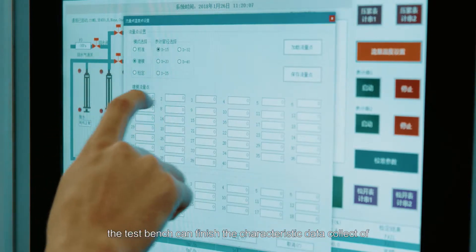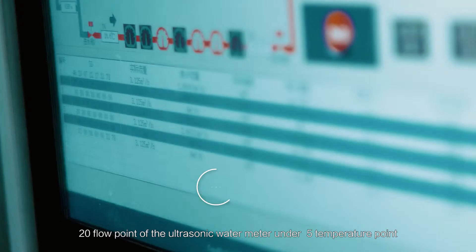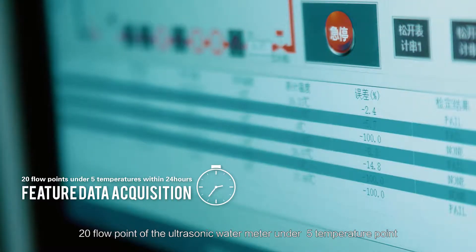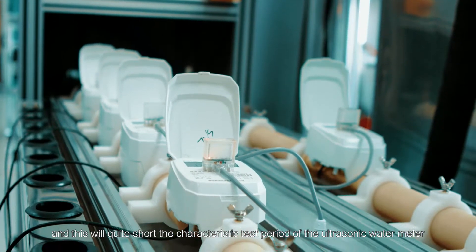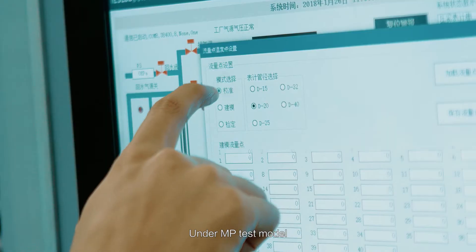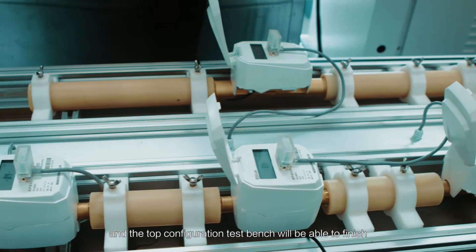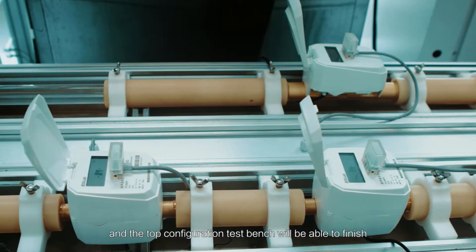Under the modeling pattern, the test bench can finish the characteristic data collection of 20 flow points of the ultrasonic water meter under five temperature points, which will quite shorten the characteristic test period of the ultrasonic water meter. Under MP test model, the test bench can finish three testings within 10 minutes.